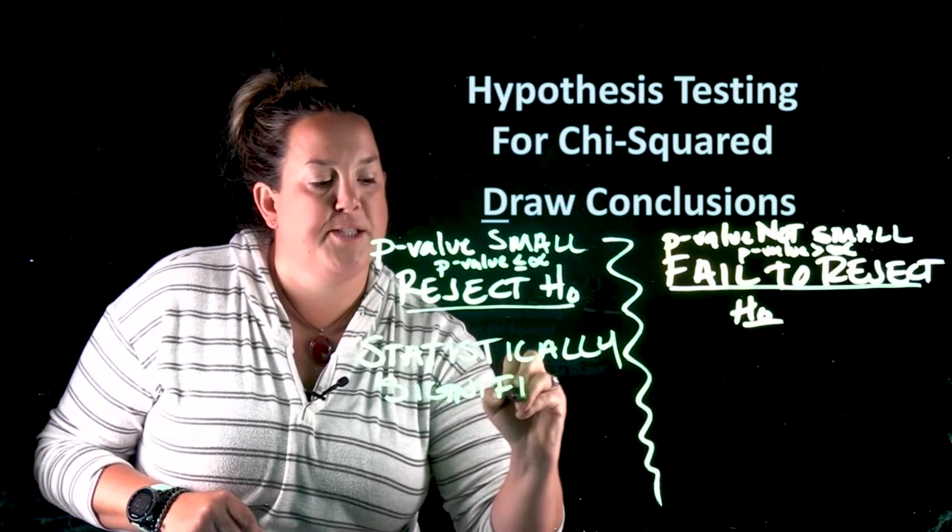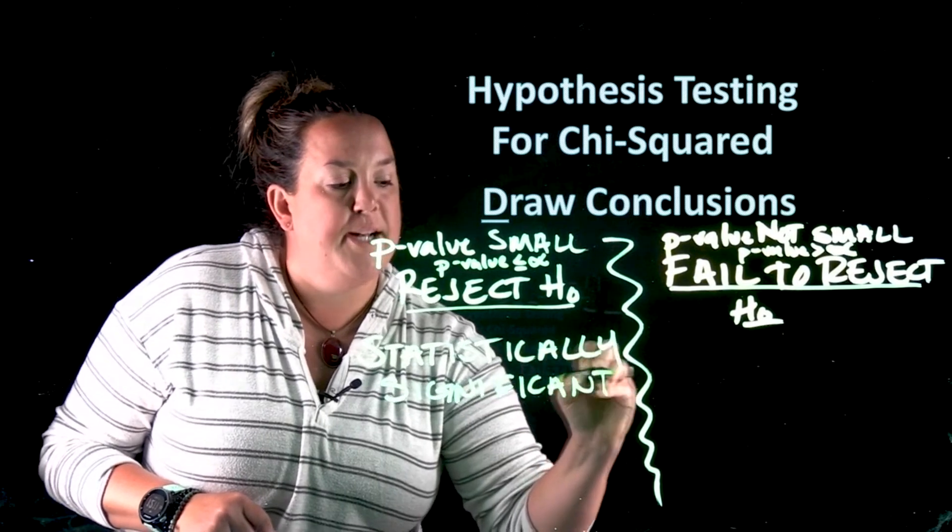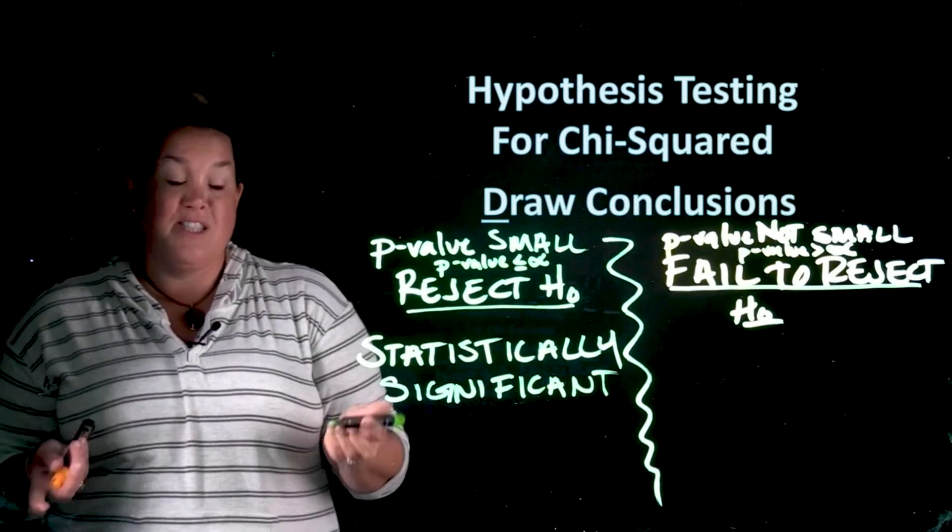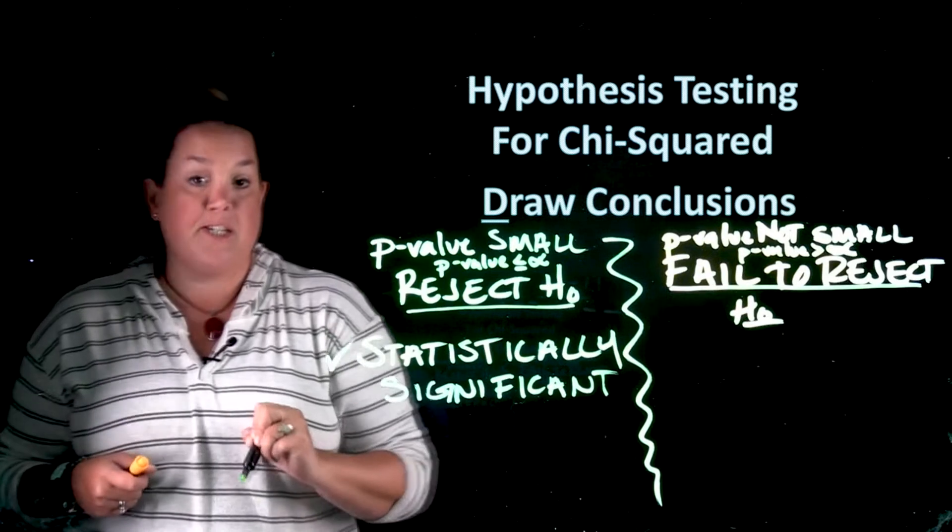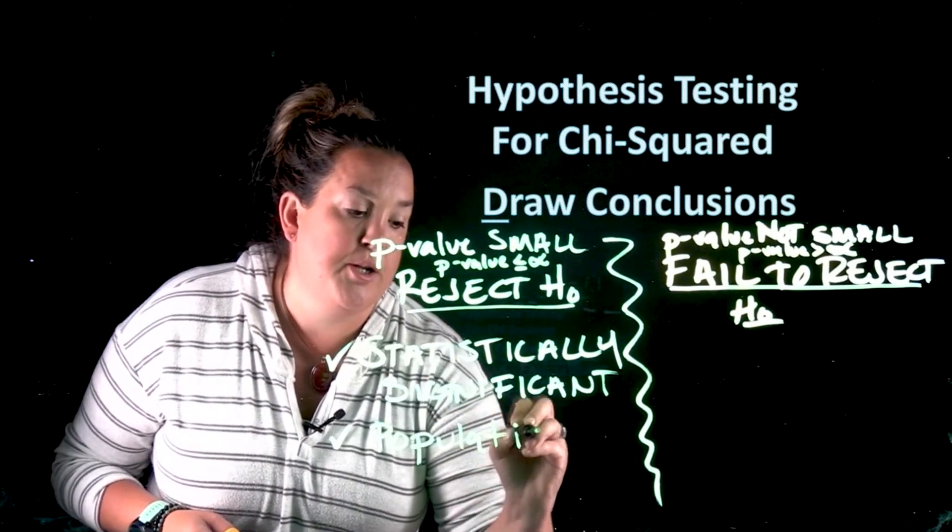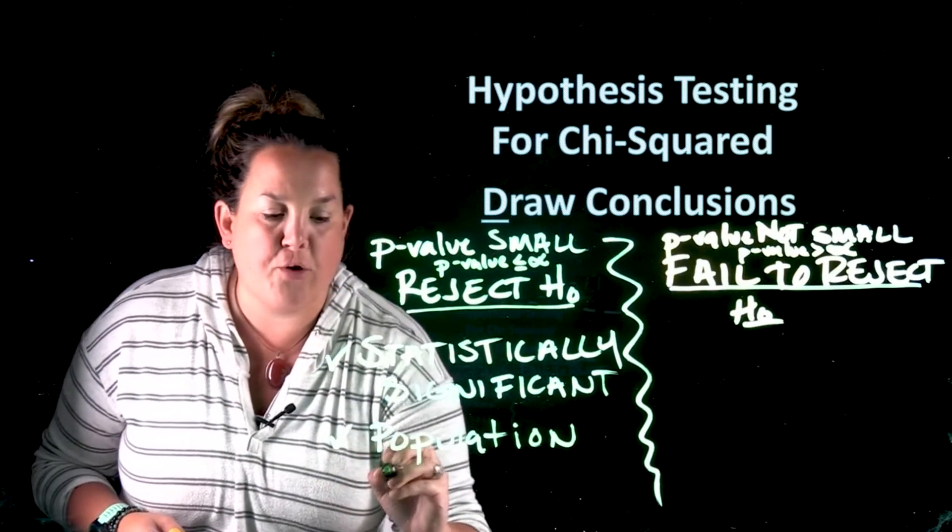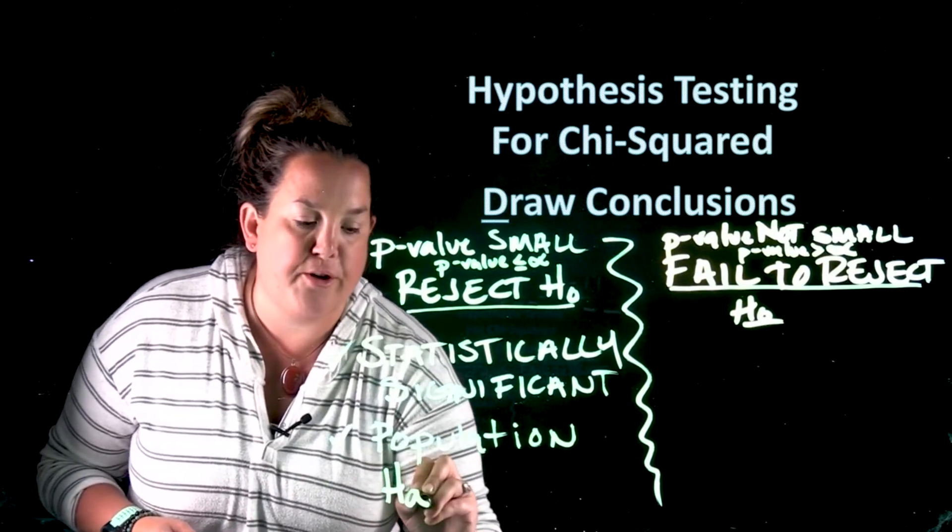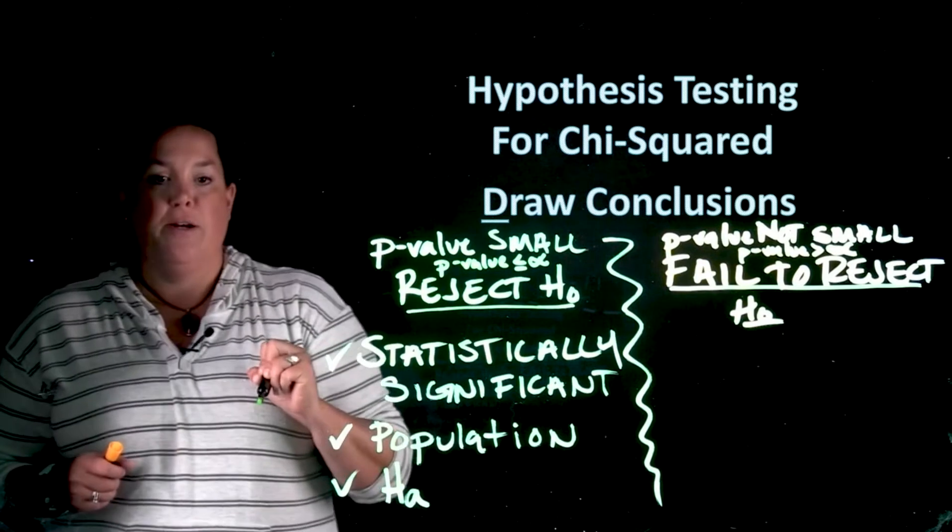Essentially you're going to be saying that there's statistically significant evidence, you'll say for the population, and then essentially you are going to restate the alternative that you wrote up in FRED.